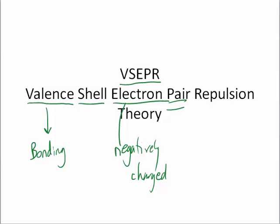So in a bond you have two electrons involved. And because they're all negatively charged, when they get near each other, they repel each other. They push away from each other.